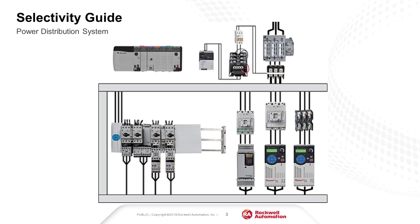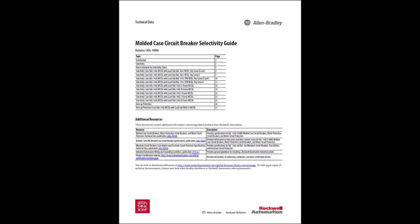In a power distribution circuit, proper selection of a protection system helps to maintain safe and economical function of electrical installations and can reduce losses associated with unwanted service interruptions. This video explains how to read the selective coordination tables found in Technical Data 140G TD050, the Molded Case Circuit Breaker Selectivity Guide.